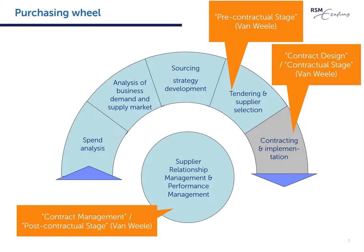The pre-contractual stage, according to Van Wehle, includes determining the specification of need and the tendering process. The contractual stage, or contract design, includes negotiation and contract signing. The post-contractual stage, or contract management, includes project execution or delivery and claims handling. While this seems related to what in the PSM wheel is named the implementation part of contracting, I would suggest relating contract management to the core circle of the wheel: supplier relationship management and performance management.